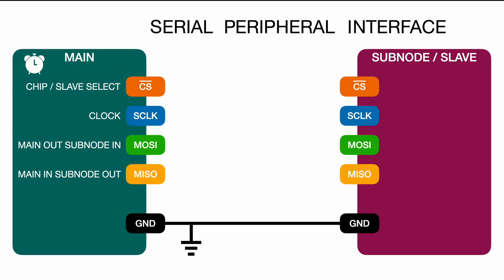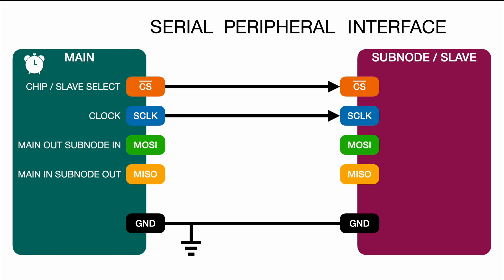Chip select or slave select is exactly what it says — it's there to select which subnode we want to talk to. CS will be connected to CS, and the direction of the arrow indicates who is talking to whom. The clock frequency is defined by the main module, not by the subnode.